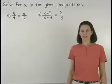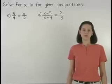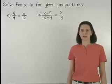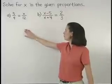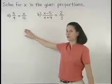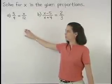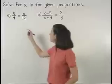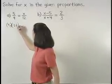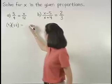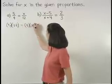To solve for x in each proportion, we simply use the means extremes property. In part A, since 5 over 4 equals x over 12, we know that the product of the extremes, 5 times 12, equals the product of the means, 4 times x.